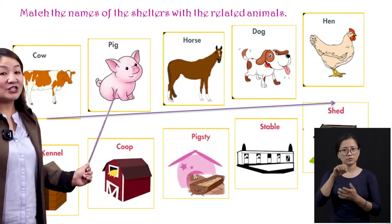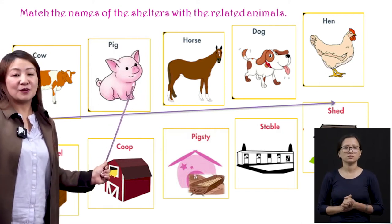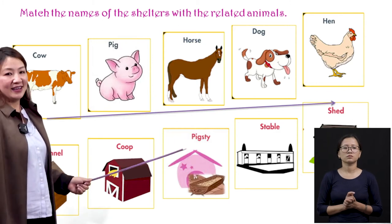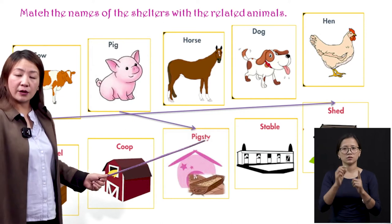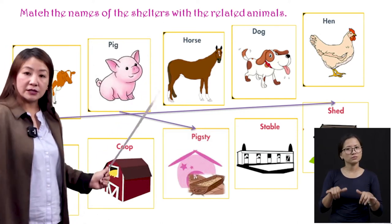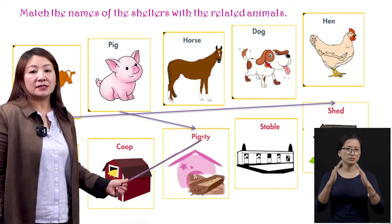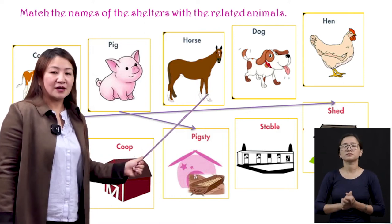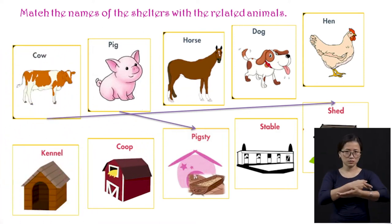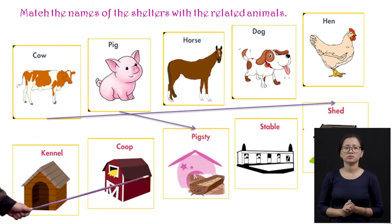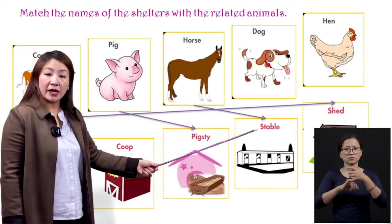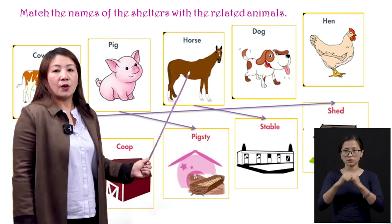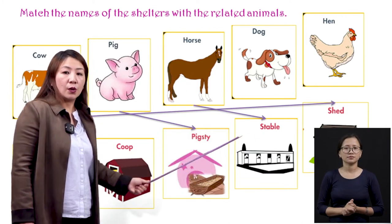Then let us find out the shelter of a pig — oink oink pig. Pigs stay in a shelter called pigsty — P-I-G, S-T-Y — pigsty. Next, the horse — what is the name of the shelter? The shelter of a horse is called stable — S-T-A-B-L-E, stable. Horses are kept in a shelter called stable.